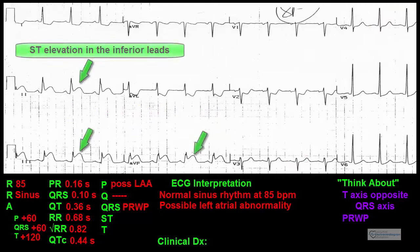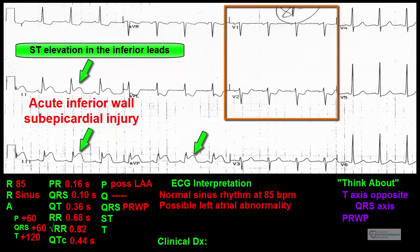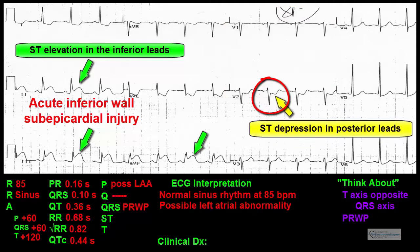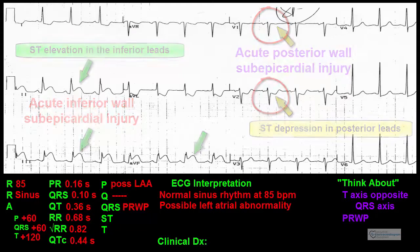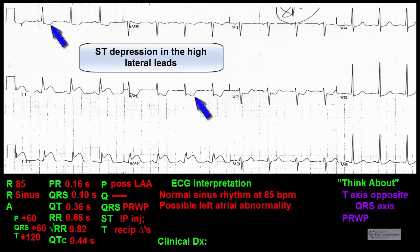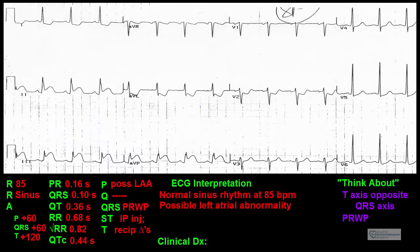ST segments: The ST segments are elevated in leads 2, 3, and AVF, suggesting acute inferior subepicardial injury. Since the inferior wall is involved, we should look for posterior wall involvement — and in fact, there is significant ST segment depression in lead V2 and subtle ST segment changes in lead V1, suggesting acute posterior wall subepicardial injury. In addition, there is ST segment depression in leads 1 and AVL, consistent with high lateral reciprocal changes. The ST segments in the remaining leads are at baseline and normal.